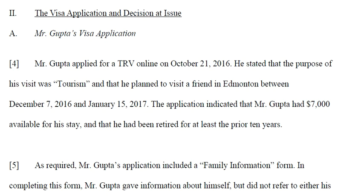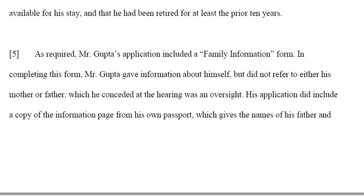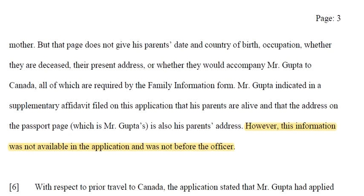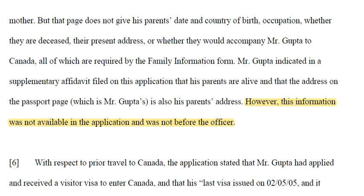Mr. Gupta applied for a TRV online on October 21, 2016. He stated the purpose was tourism and that he planned to visit a friend in Edmonton between December 7 and January 15, 2017 — approximately 45 days. The application indicated he had $7,000 available and that he had been retired for at least 10 years. His application included a family information form, but he did not refer to either his mother or father — which he conceded at the hearing was an oversight. The application did include a copy of his passport information page showing his parents' names.